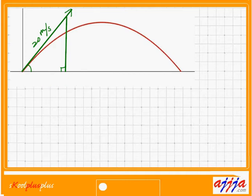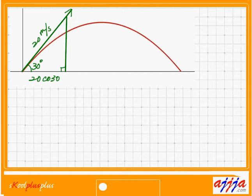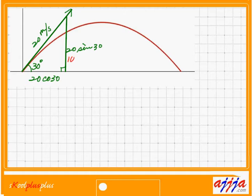Using 30 degrees: cosine 30 times velocity 20. For the vertical velocity — that's the opposite side of the angle — we use sine. So 20 sine 30: sine 30 is one half, half of 20 is 10 meters per second upward. For the sideways component: cosine 30 is root 3 over 2, so 20 times root 3 over 2 gives 10 times root 3.